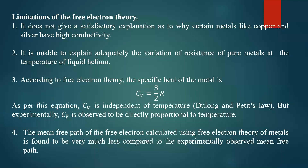But experimentally, Cv is observed to be directly proportional to temperature. According to classical theory, the specific heat is independent of temperature, but experimentally it is observed that the specific heat is directly proportional to temperature. There is a discrepancy between this theory and the experimental observation that cannot be explained.